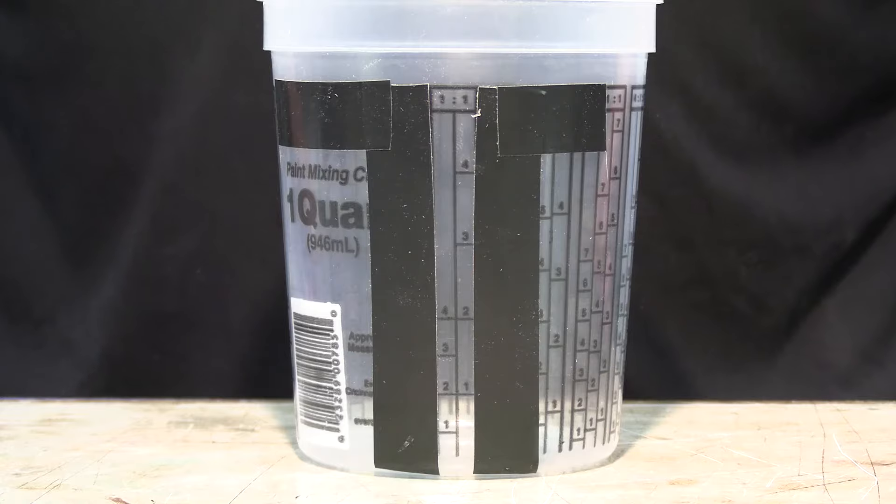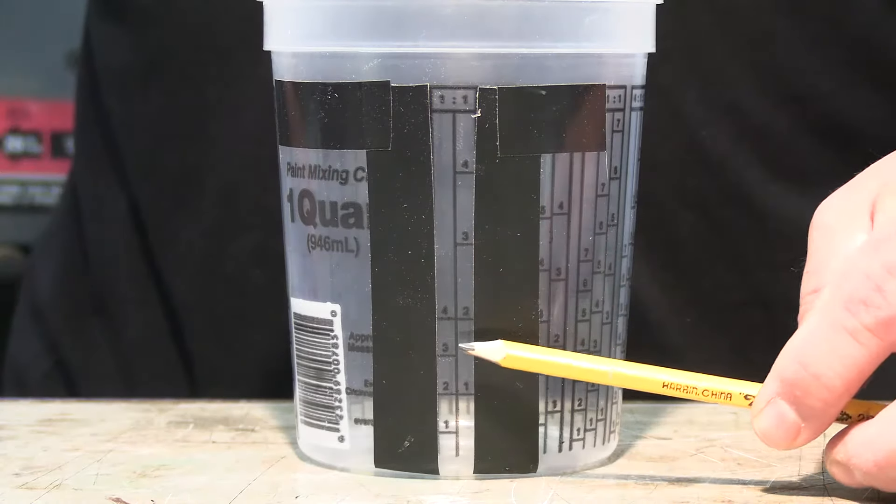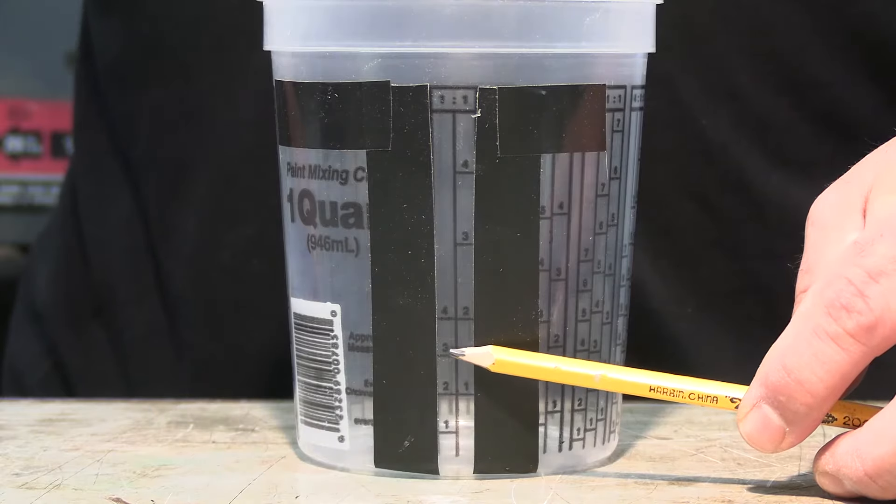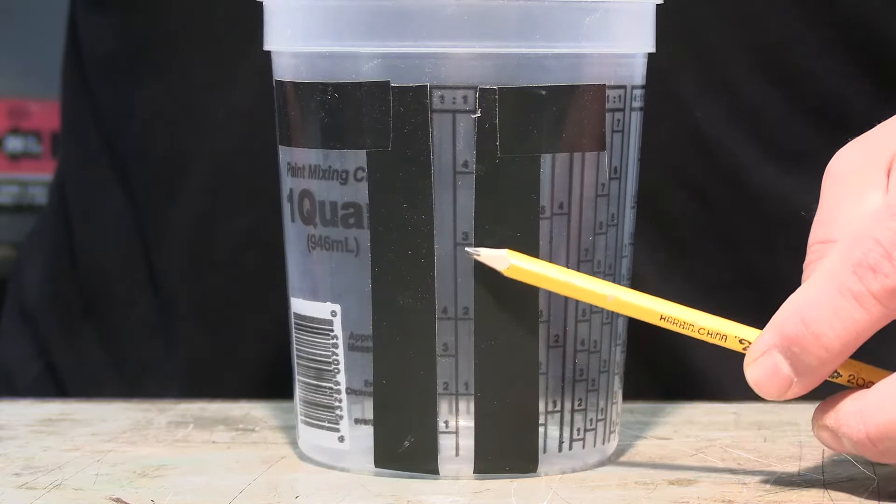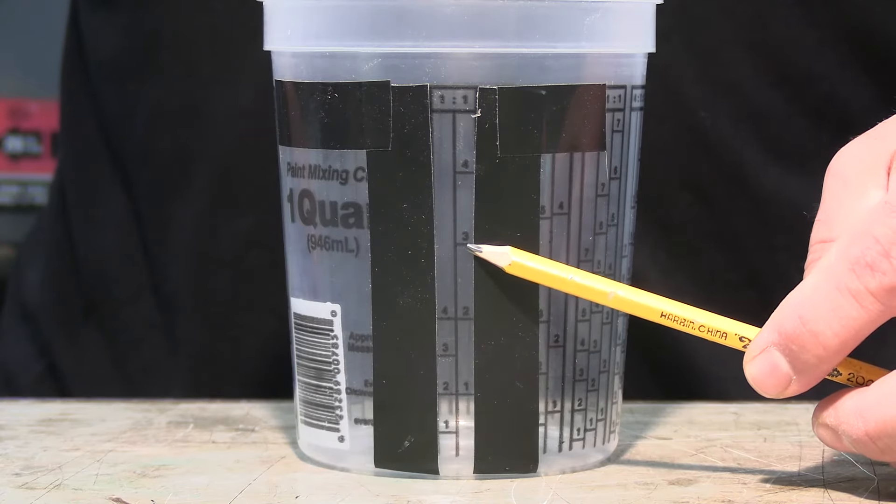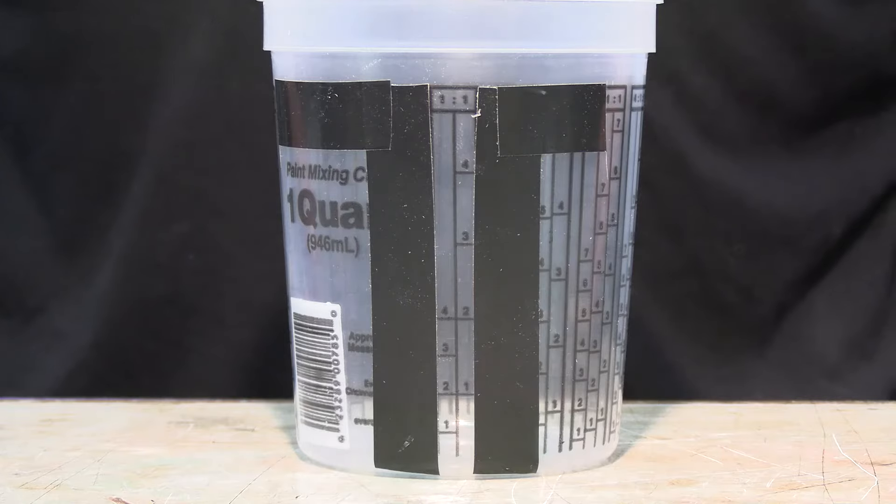I'm going to be mixing some coasters today and I think I'm going to use the number three level. So, I'm going to fill the first three with part A and then top it up with part B to the second three. That way, you know that the levels are correct and your epoxy will cure properly.